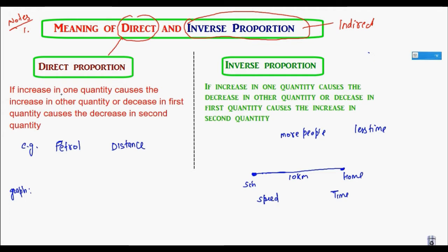Two quantities are said to be in direct proportion if, when I increase one quantity, the second quantity also increases, and if I decrease one quantity, the second quantity also decreases. For example, in a car, if I pour more petrol, more distance it will cover. If I add less petrol, then it will cover less distance. This is an example of direct proportion.